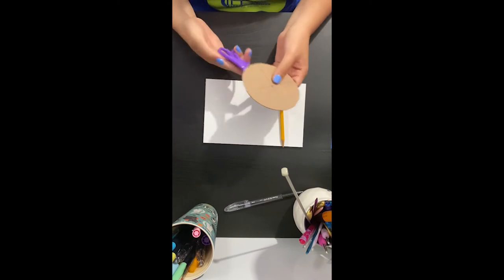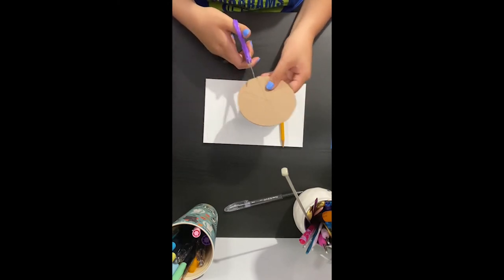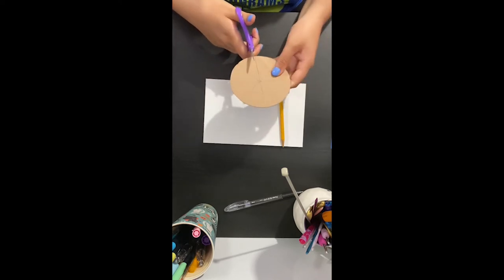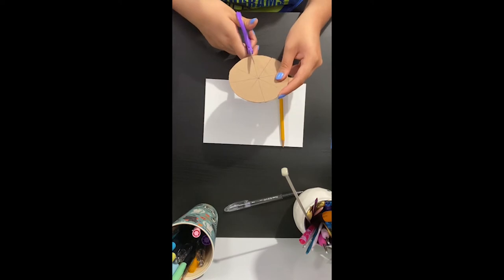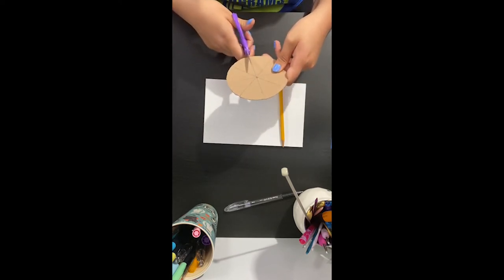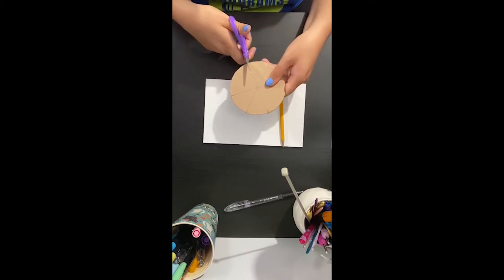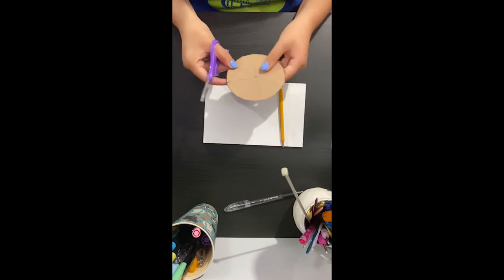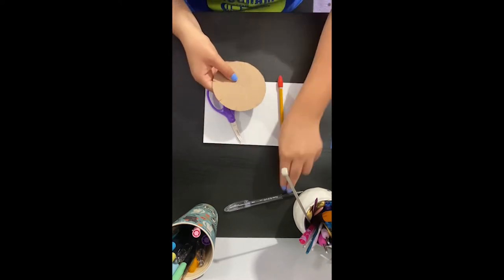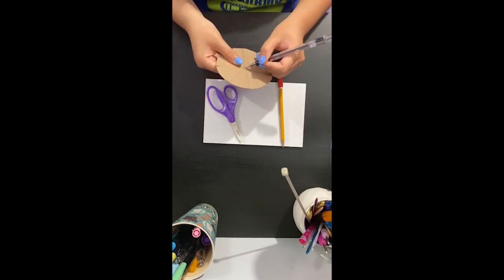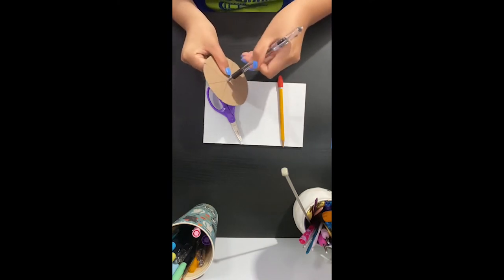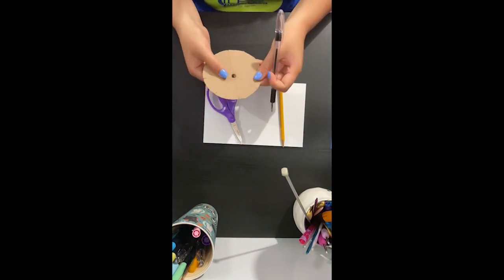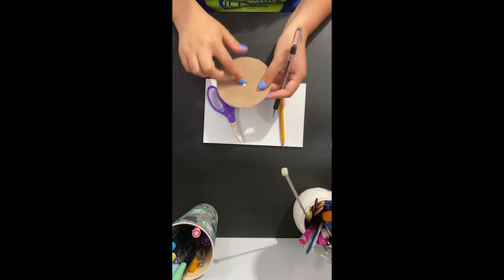We're going to take the scissors and we're going to cut small slits on each of the lines of the circle. You're also going to want to poke a hole right through the center of your circle. So use something sturdy. Maybe the pen would be a better option in this one. You're going to poke a hole right in the middle. You want the hole to be about that big. You don't want it too small.